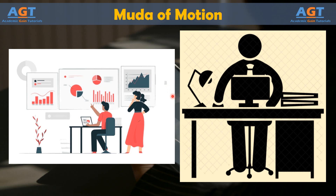If it takes only half a second more to toggle between the two windows, the team is still spending a collective 400 minutes a day — that is just over 6.5 hours — toggling. If the average hourly wage for a data worker is $10, the team is spending an extra $325 each week.